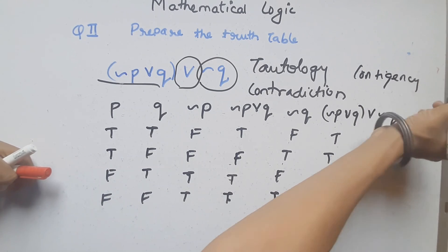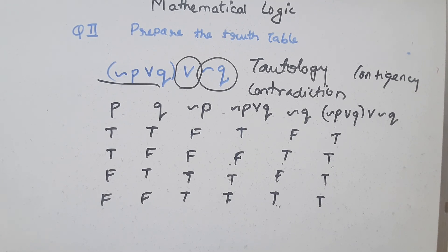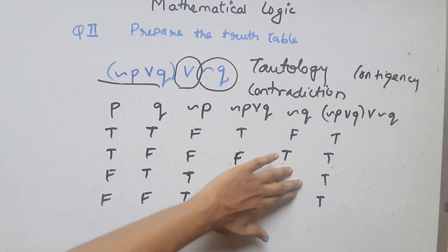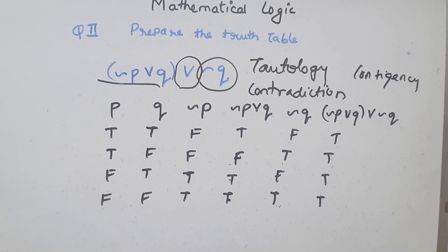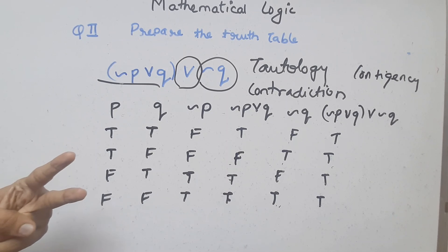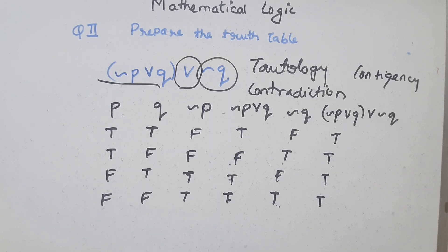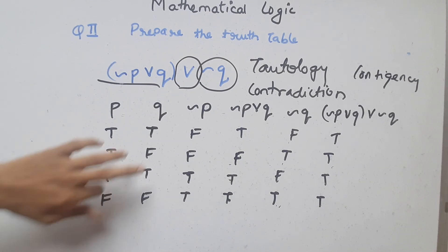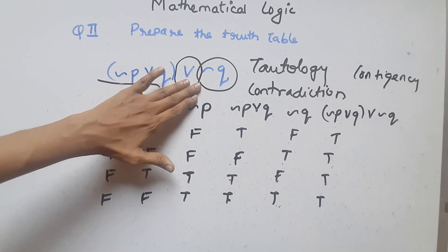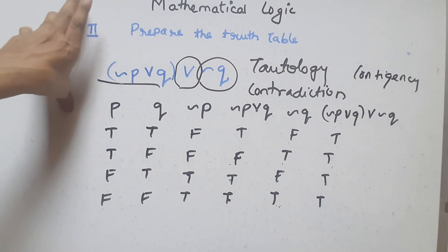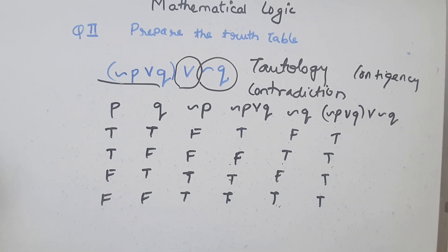So I have explained two important things for this chapter: first, symbolic form and how to write the truth value; second, how to solve truth tables. You must remember the basic tables for AND, OR, IF-THEN, and IF-AND-ONLY-IF. I hope you understood the video. If you have any doubts, put them in the comments and I will make a separate explanation video. Thank you.